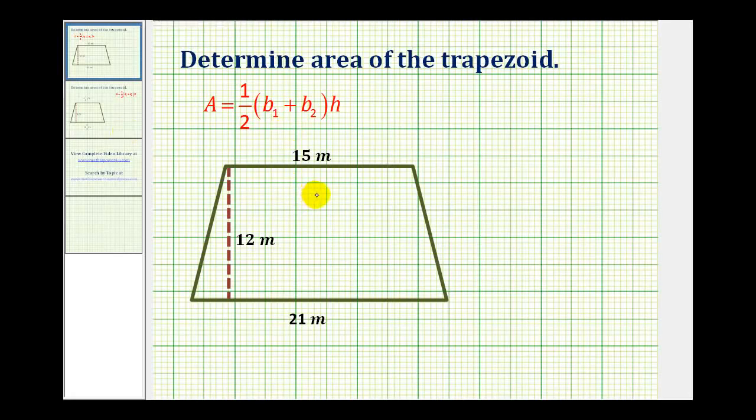We want to find the area of the given trapezoid. A trapezoid is a quadrilateral with one pair of parallel sides.